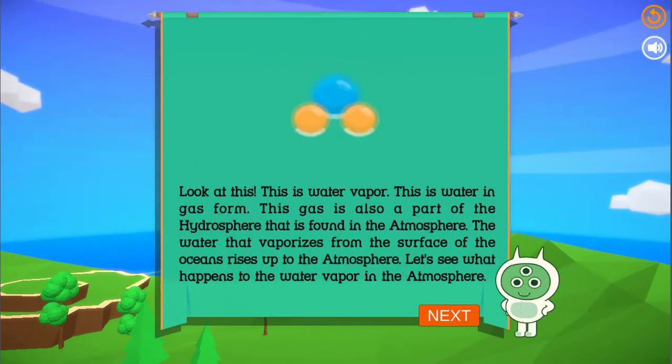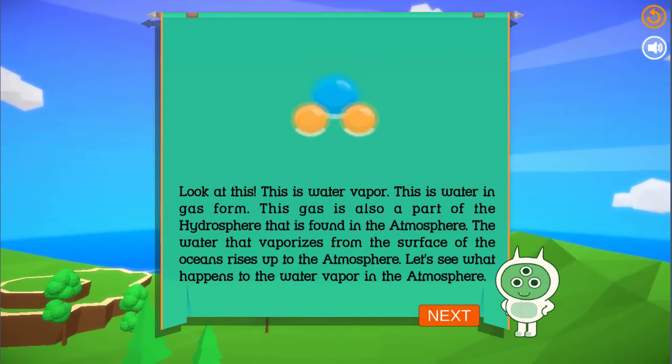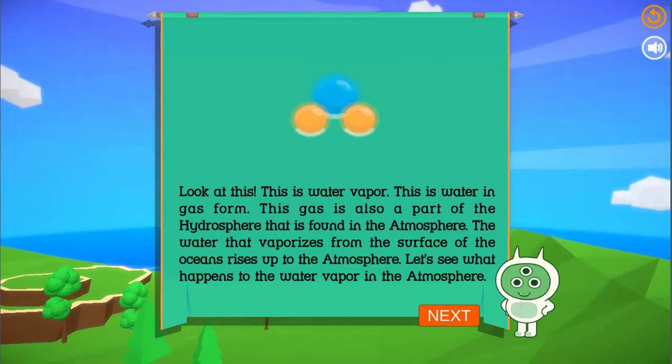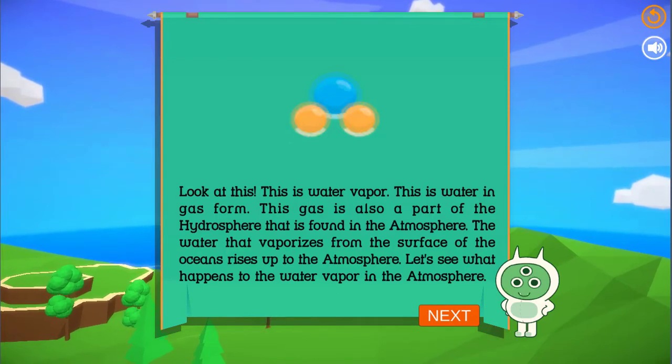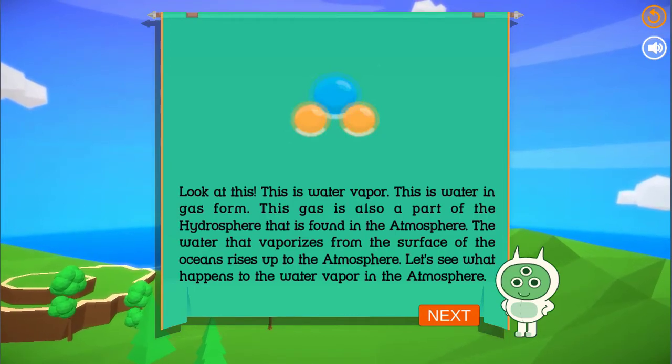Look at this. This is water vapor. This is water in gas form. This gas is also a part of the hydrosphere that is found in the atmosphere. The water that vaporizes from the surface of the oceans rises up to the atmosphere. Let's see what happens to the water vapor in the atmosphere.